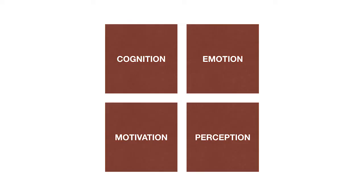Oftentimes we make erroneous assumptions about those humans. In order to understand their behavior, we need to think about four specific things: cognition — how do they make decisions and think? — but we also need to think about emotion, how do they feel about decision-making? Their motivation, how motivated and eager are they to actually change behaviors? And finally, perception — do they see the problem in the same way as you see the problem?